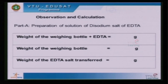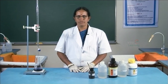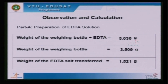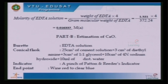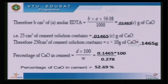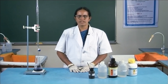The calculations and observations: for the preparation of EDTA solution, the weight of sample transferred is 1.521 grams. The molarity of the EDTA solution calculated is 0.016337 molar. The results are tabulated as shown. The volume of EDTA used is 16 cm³, and the percentage of calcium oxide in the given sample is 52.69%.